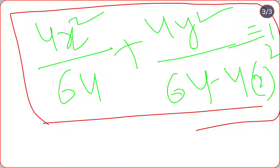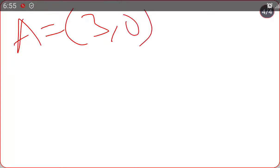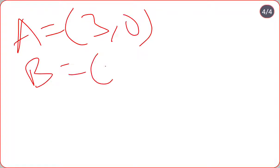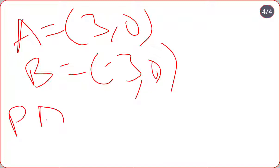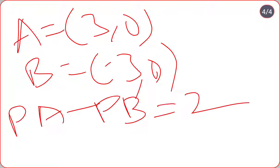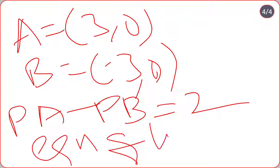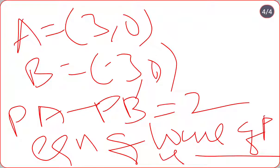First homework question: A equals (3, 0), B equals (-3, 0), PA minus PB is equal to 2. Find the equation of locus of P.